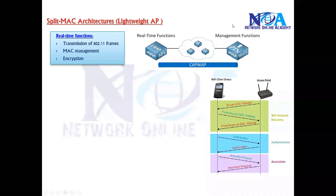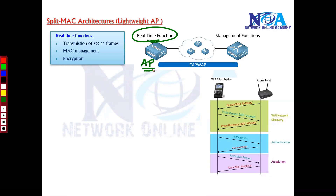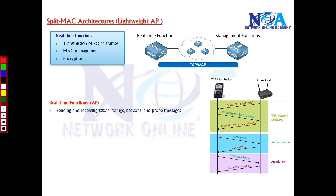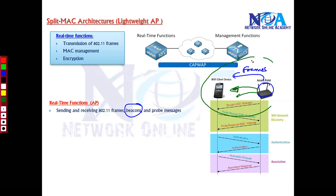Let's look at the functions in more detail. The general rule is: all real-time functions are handled by the access point, and all management-related functions are handled by the WLC. One real-time function is sending and listening to frames — the access point sends out 802.11 frames and beacon messages. Beacons are wireless signal information broadcast by the access point within the coverage area. When the client listens to these beacons, it sends out a probe request.